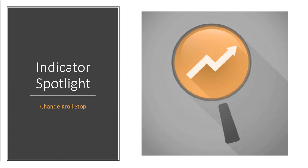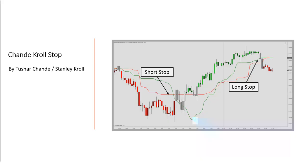It is a volatility-based trailing stop. As most indicators in this category, it will help manage your profits by keeping positions open as long as they move in your favor. There are two stop lines: green for long and red for short. You'll close a long position once prices drop below the green line, and a short exit will occur when prices break above the red line.